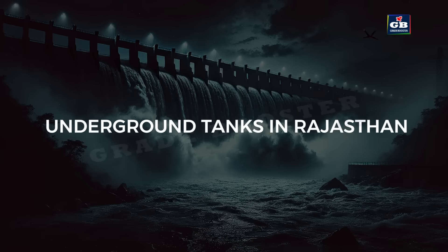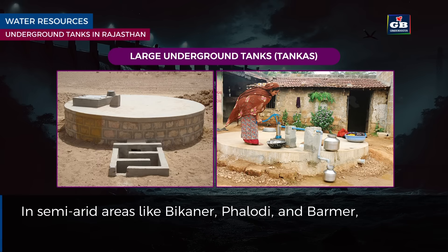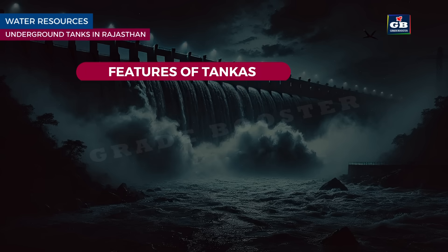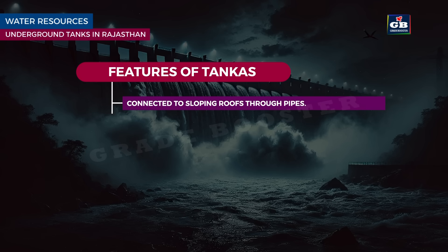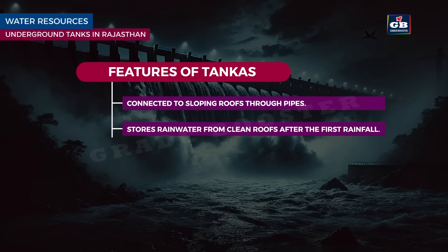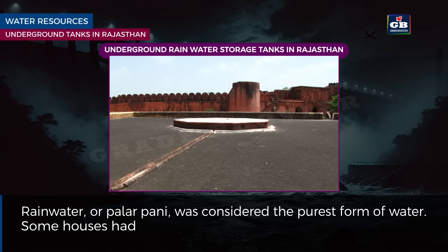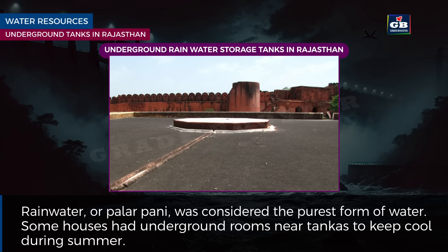Underground tanks in Rajasthan: In semi-arid areas like Bikaner, Phalodi and Barmer, houses had large underground tanks called tankas to store rainwater. They are connected to sloping roofs through pipes and store rainwater collected from clean roofs after the first rainfall. They could hold water till the next rainfall, serving as a reliable source during summers. Rainwater, called Palarpani, was considered the purest form of water. Some houses had underground rooms near tankas to stay cool during summer.